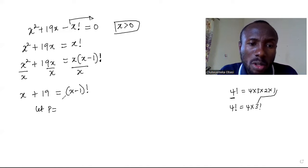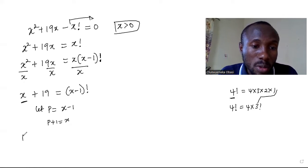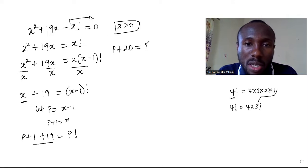be equal to x minus 1, so that means p plus 1 will be equal to x. So here becomes p plus 1, and here becomes plus 19 equal to here becomes p factorial. And p plus 1 plus 19 is going to give me p plus 20 equal to p factorial.